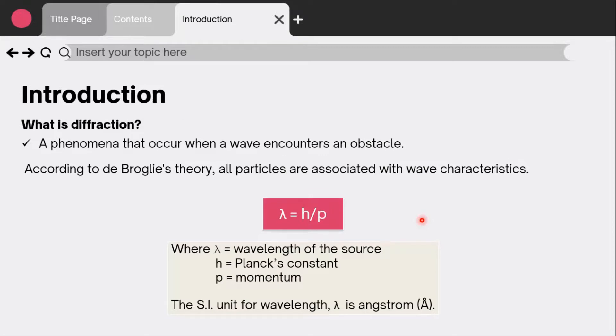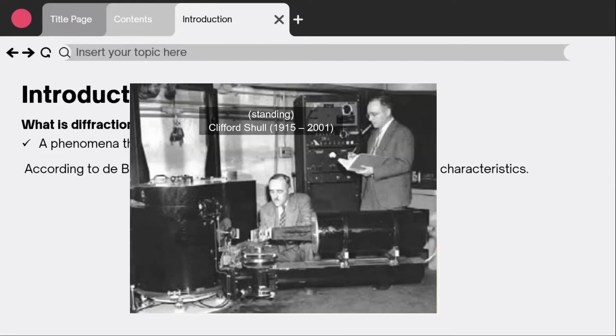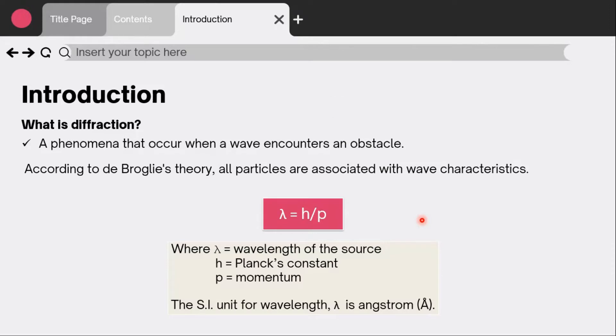The first neutron diffraction experiment was in 1945 by Ernest Wollan using the graphite reactor. Along with Clifford Shull, they outlined the principles of the technique. According to the de Broglie theory, all particles are associated with wave characteristics.